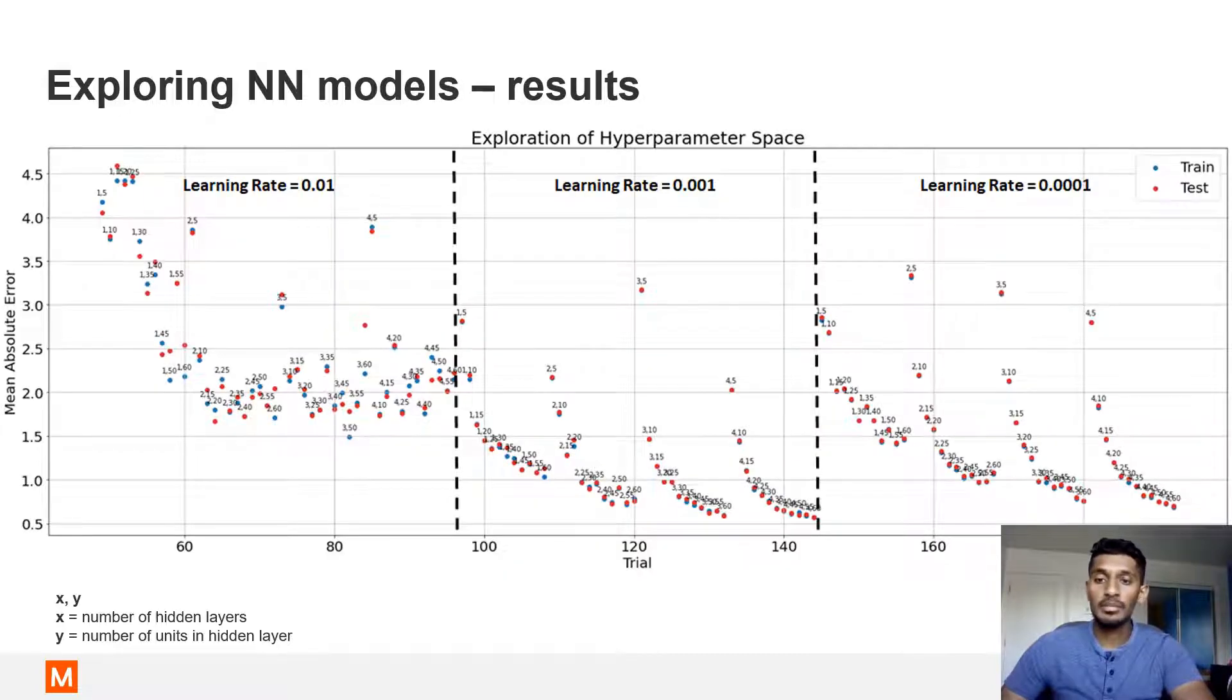The exploration step produced 192 different neural network configurations. Each block in this plot represents different combinations of hidden layers and units per layer for particular learning rates. The first 48 are not shown here as a high learning rate of 0.1 was used, which didn't allow the optimizer to converge. These different neural network configurations were trained using data from the base model, and the mean absolute errors were evaluated. You can see that as the learning rates decrease, the general trend is that the mean absolute errors decrease.